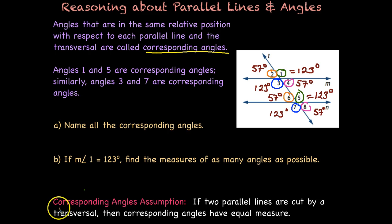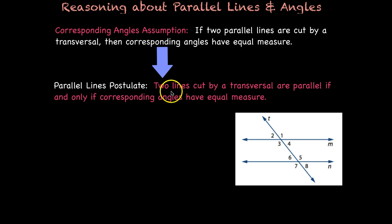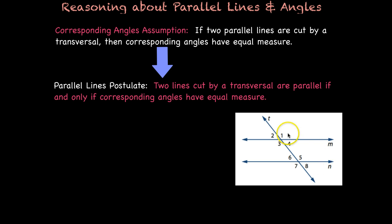Here is a very important assumption for your notes — the corresponding angles assumption: if two parallel lines are cut by a transversal, then corresponding angles have equal measure. We can also switch this if-then statement to get the parallel lines postulate: two lines cut by a transversal are parallel if and only if corresponding angles have equal measure. So if angle one is 120 degrees and angle five is also 120 degrees, because those are equal corresponding angles, then we would know that line M is parallel to line N.